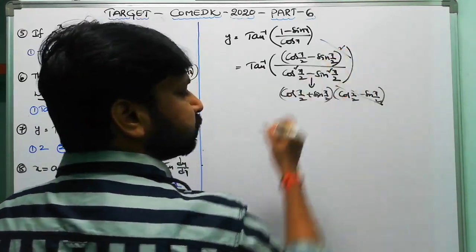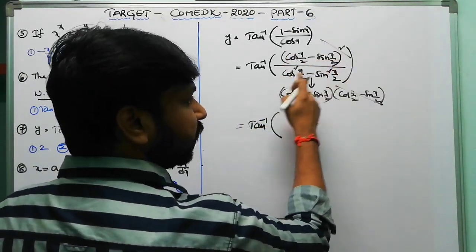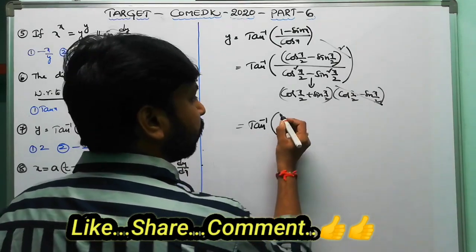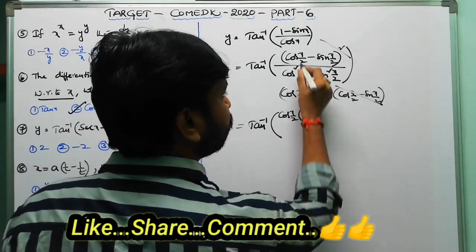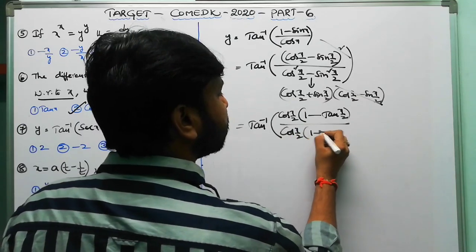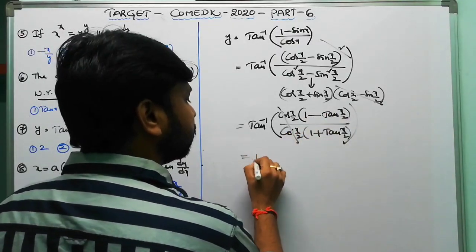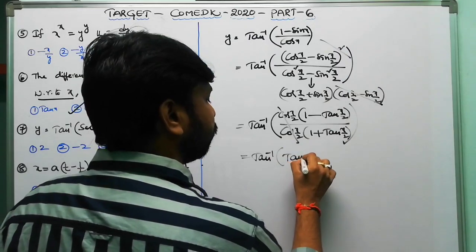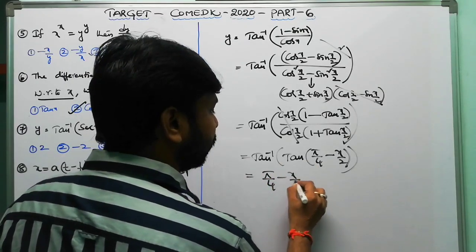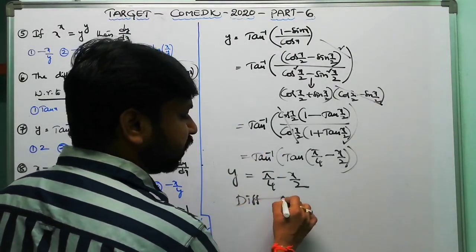After cancellation, (cos(x/2) − sin(x/2)) cancels from numerator and denominator, leaving tan⁻¹ of (cos(x/2) − sin(x/2))/(cos(x/2) + sin(x/2)). Dividing numerator and denominator by cos(x/2): (1 − tan(x/2))/(1 + tan(x/2)), which equals tan(π/4 − x/2). So y equals tan⁻¹(tan(π/4 − x/2)) equals π/4 − x/2.